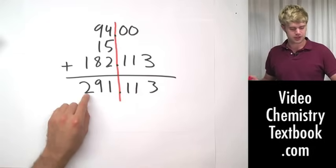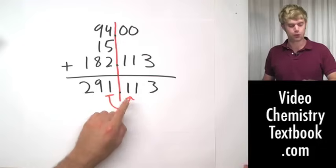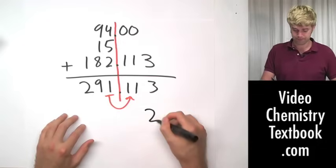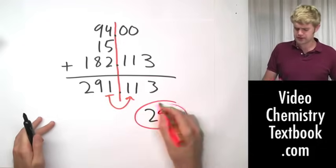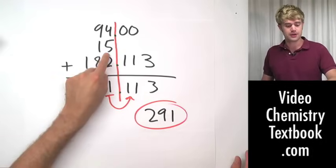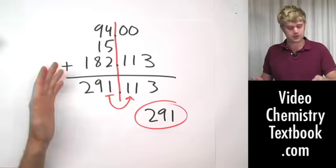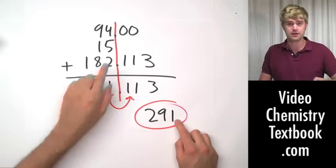And it shows us where we round. That means that it's going to be 291. Look next door here. It's a one, so I'm going to keep it the same. 291. This left us with zero decimal places, with no decimal places at all, but it's correct because the number here, 15, didn't have any decimal places, so our final answer can't have any more decimal places than this guy had here.